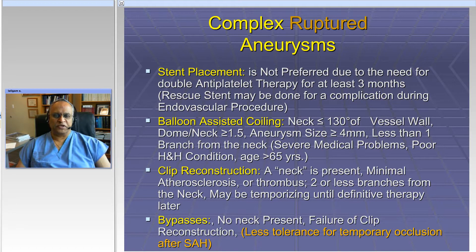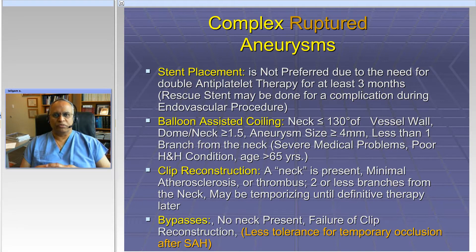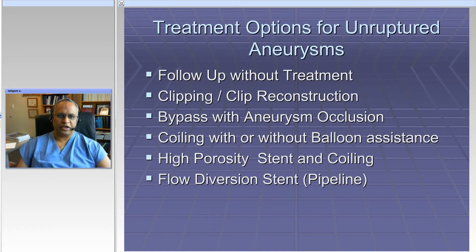For certain ruptured aneurysms, balloon-assisted coiling can be employed. In some patients, it can be a temporizing treatment — you can use this to hold a patient from having an acute re-bleed and then later think about other endovascular therapy. Then you move on to microsurgical treatments, which basically have two options: clip reconstruction and bypasses.